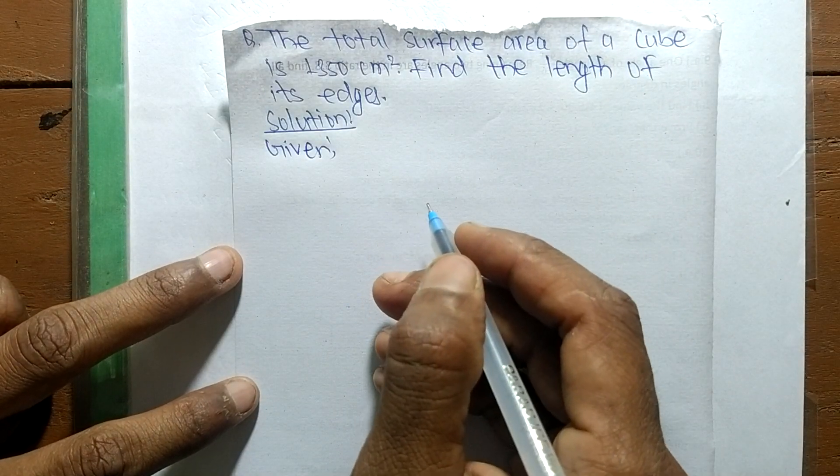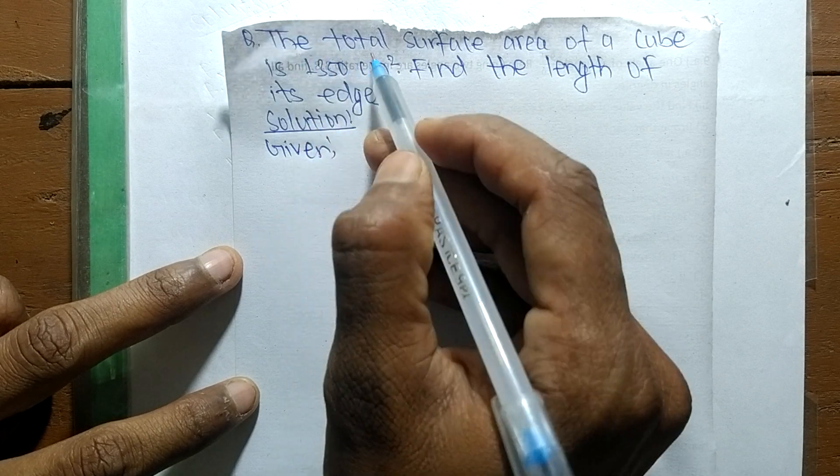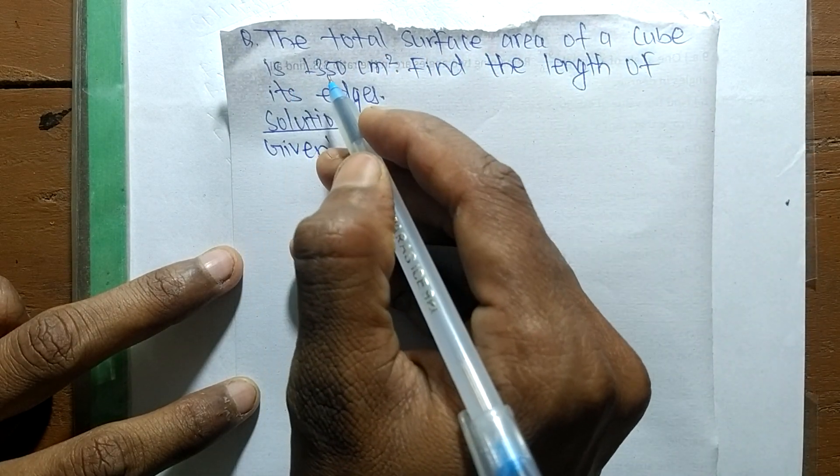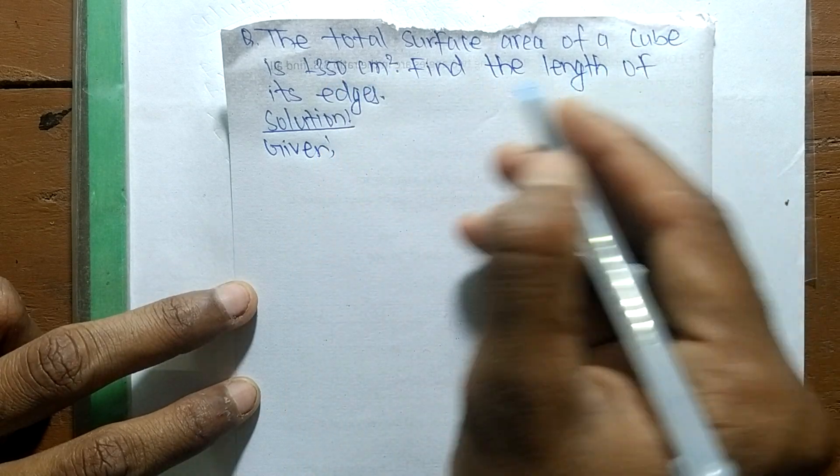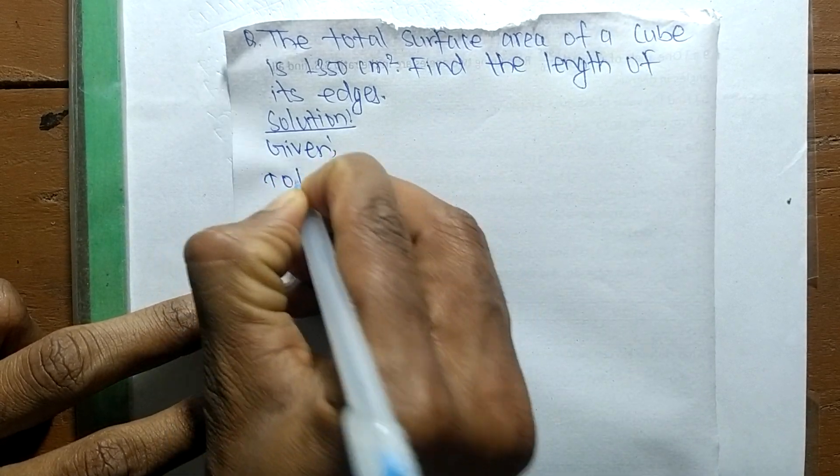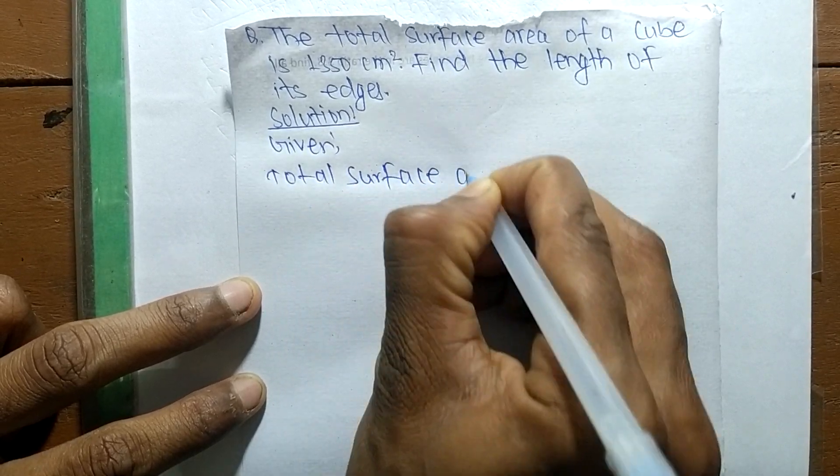Today in this video we shall solve a mathematical problem. The question is: the total surface area of a cube is 1350 centimeters square. Find the length of its edge.